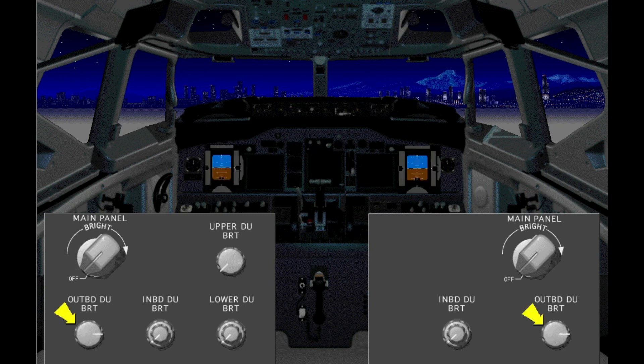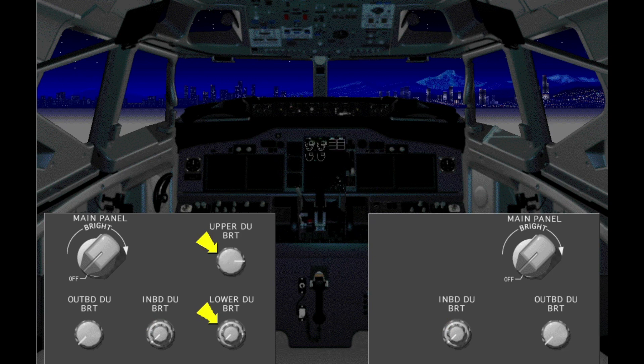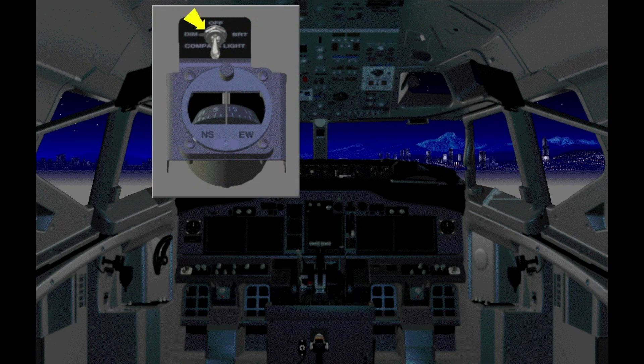These brightness control panels include controls for the outboard display units and the inboard display units. If radar is shown on an inboard display unit, this control increases or decreases the brightness of the radar display. Controls for the upper and lower display units are also on the captain's panel. The standby magnetic compass switch has three positions: dim, off, and bright.